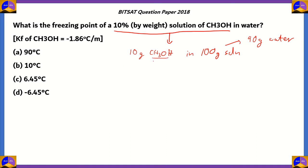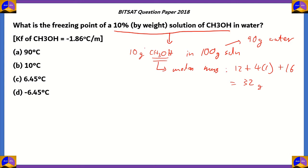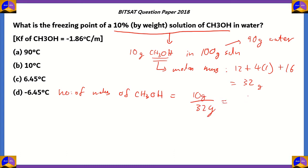The substance used is methanol, so we calculate its molar mass: 1 carbon = 12, 4 hydrogens = 4, 1 oxygen = 16. So 12 + 16 + 4 = 32 grams per mole. Number of moles of CH₃OH = 10 grams divided by 32 grams = 5/16. We keep it as a fraction for easier calculation.